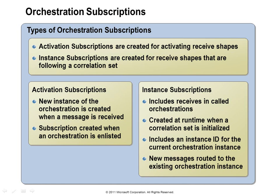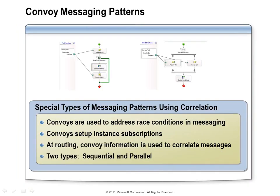The orchestration runtime makes use of two types of subscriptions. The first is an activation subscription — when a message arrives that fulfills it, the runtime creates a new instance of the corresponding orchestration. That subscription is registered when the orchestration is enlisted. An instance subscription is required when we use correlation; it is a finer-grained subscription with additional conditions so that an incoming message can be delivered to the specific orchestration instance that is waiting for it. These subscriptions are registered when an orchestration initializes a correlation set.